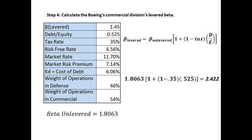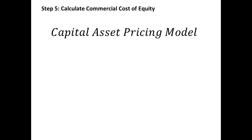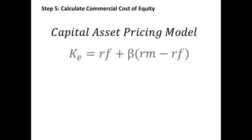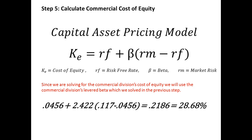Step 5: Calculate the commercial cost of equity. Now that we have the levered beta for Boeing's commercial division, we can calculate the cost of equity using the Capital Asset Pricing Model. The CAPM formula is: cost of equity equals the risk-free rate plus beta times the market risk premium. Since we are calculating the cost of equity for the commercial division, we use the commercial division's levered beta, not the company beta. Plugging in the correct inputs, we find that Boeing's commercial division has a cost of equity of 21.86%.